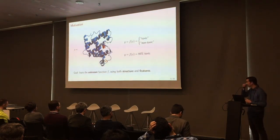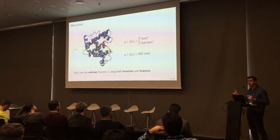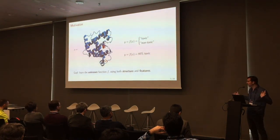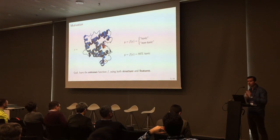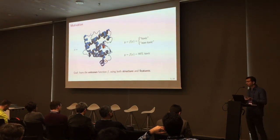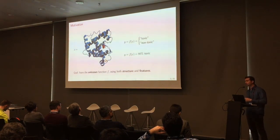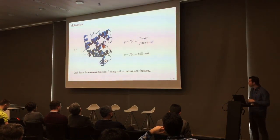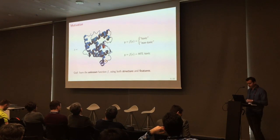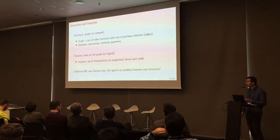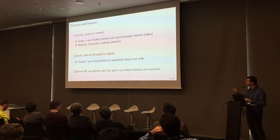One example: take a graph where a protein is represented with atoms as nodes and interactions between atoms as links. We have information about the atoms — like electric charge or atomic number — and we have these interactions. Then we want to predict something: maybe classification — that's a toxic protein, that's a non-toxic one — or regression, like 80% toxic. The tasks are the same as in classical machine learning. We want to integrate structure and features in a coherent machine learning algorithm.